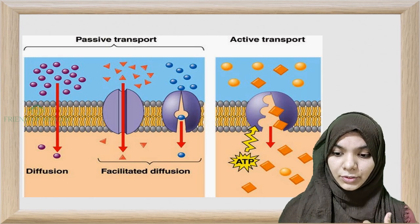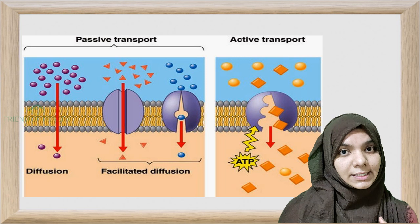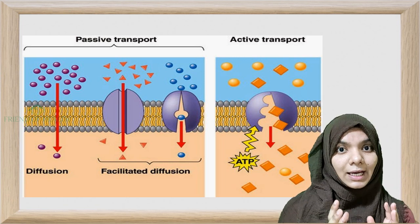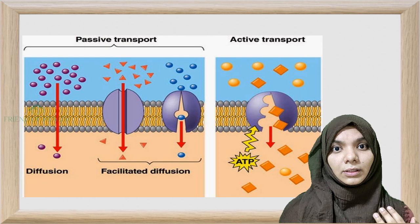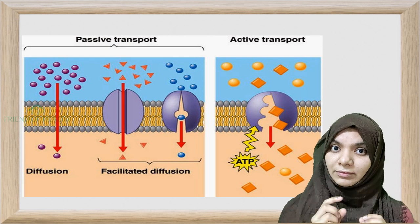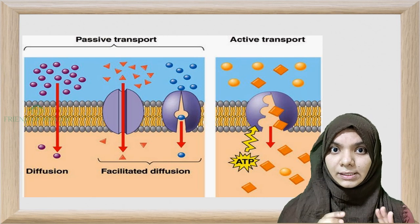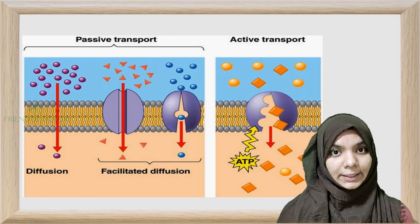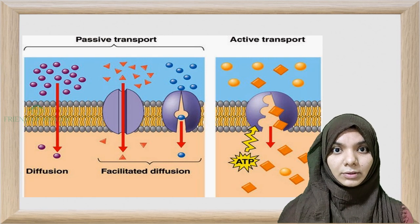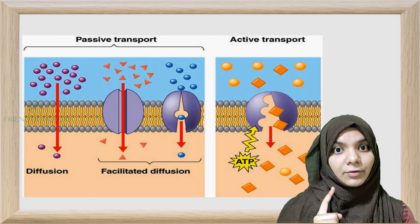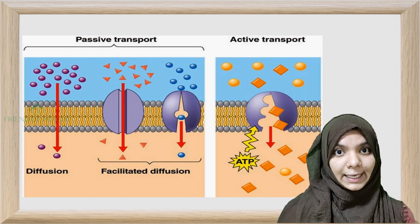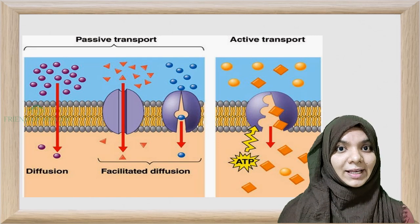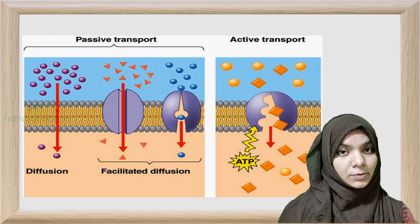Facilitated diffusion requires a carrier protein. Large molecules like glucose are transported with the help of a carrier protein — this is known as facilitated diffusion. No ATP energy is required. So the key types to remember are: active transport, passive transport, simple diffusion, facilitated diffusion, and osmosis.